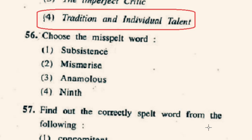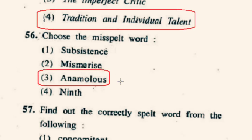Question number 56: Choose the misspelled word. The misspelled word is given in option 3rd: 'anomalous' is misspelled. The correct spelling will be A-N-O-M-A-L-O-U-S, which means irregular or abnormal.